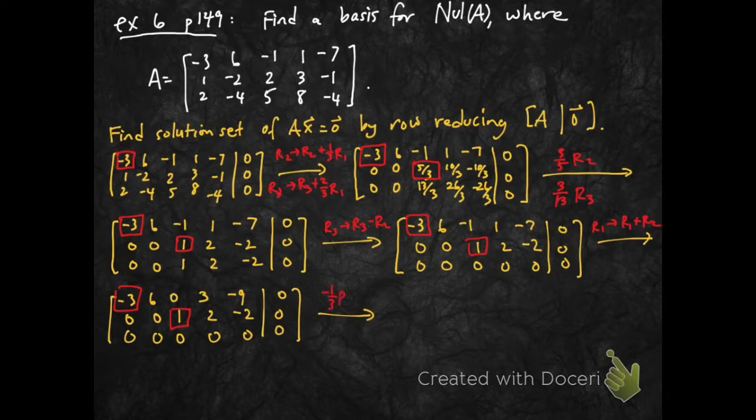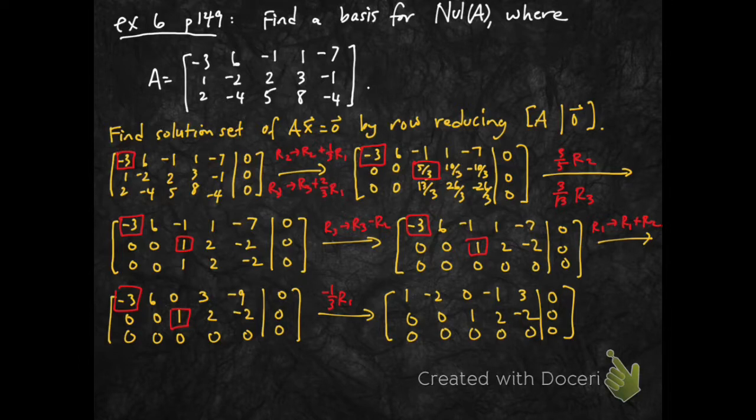And these are my pivots, and finally, I'm going to scale that minus 3 pivot by a negative 1 3rd to turn it into a 1. There.